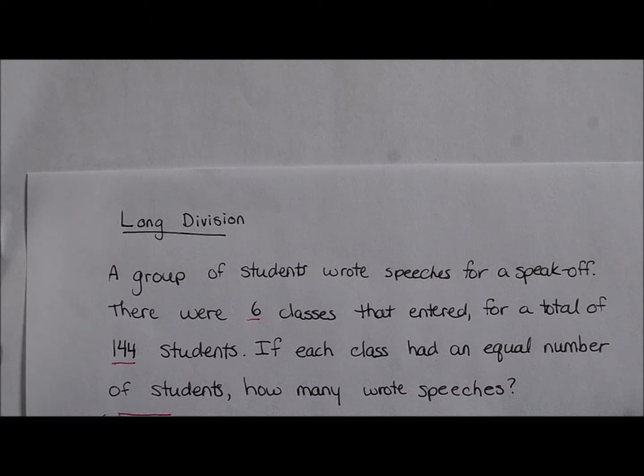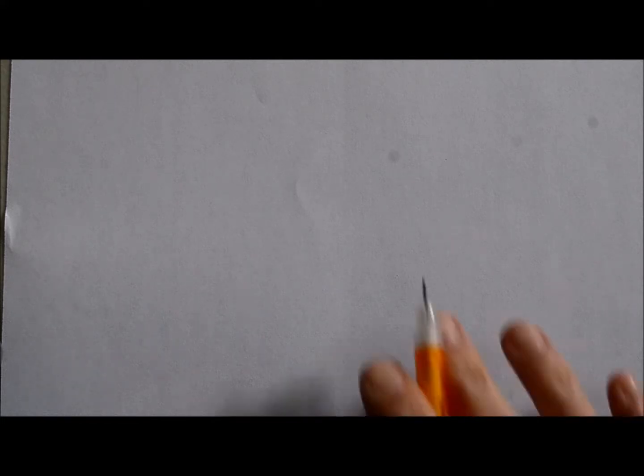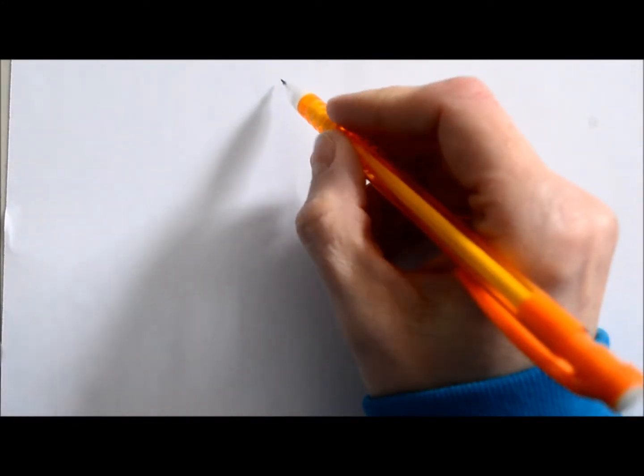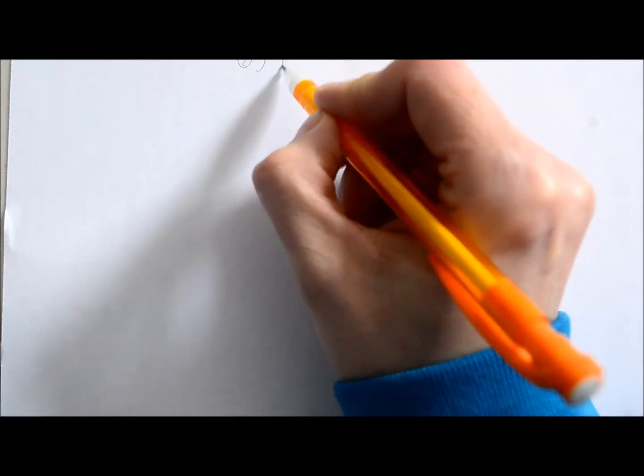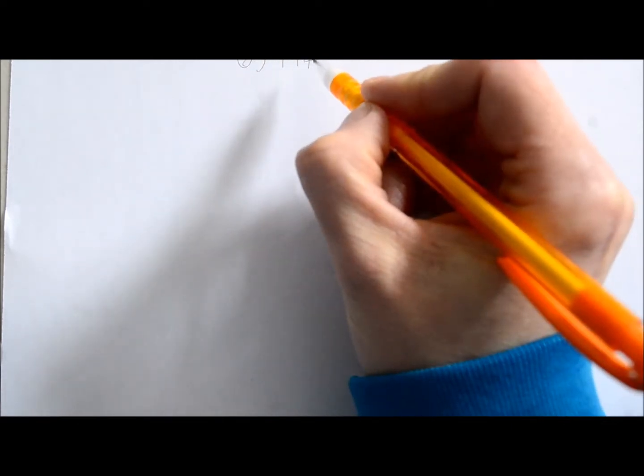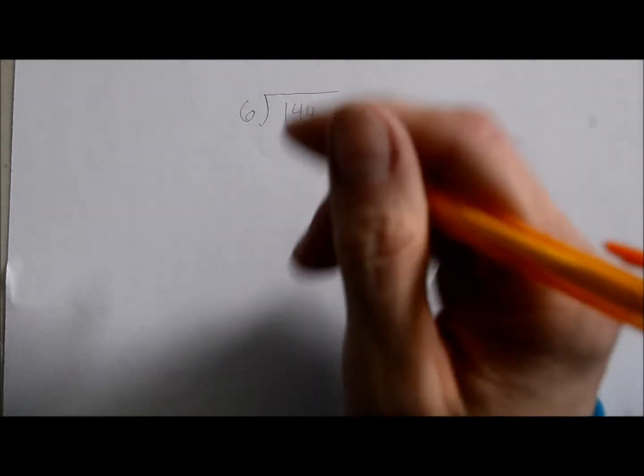Alright, so we're going to get started here. To figure out this problem we have to look at our two numbers. So there were six classes and 144 students. So we're going to start by writing out our problem. And you can't see that so I'm going to move it down. Okay, here we go.